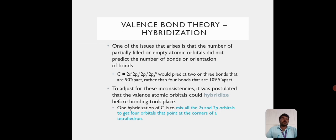Hybridization of carbon is to mix all the 2S and 2P orbitals to get 4 orbitals that point at the corners of a tetrahedron.